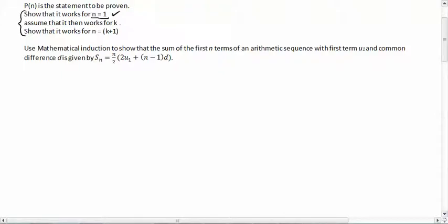then we go on to step two and we say, okay, we're going to assume that it works for k. Now originally this k can only represent one. It can only represent the first term because that's what we've proven so far.